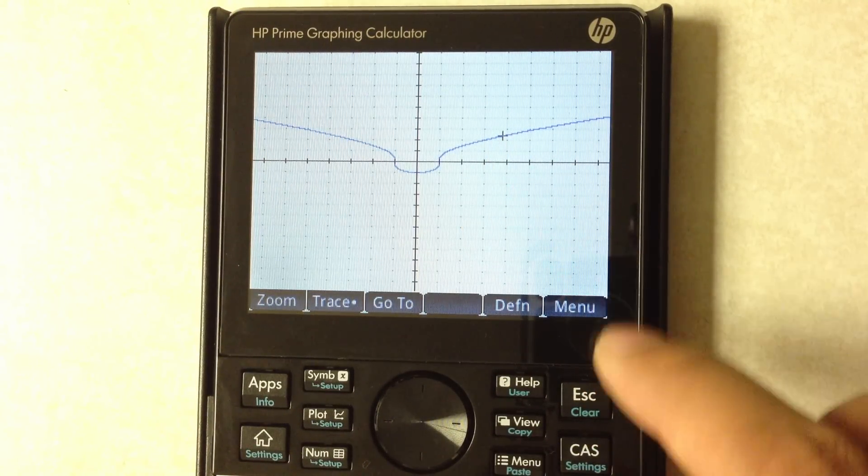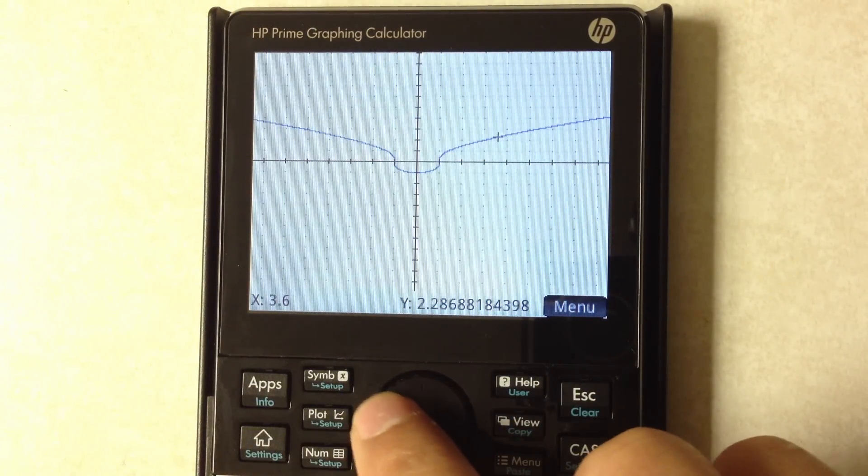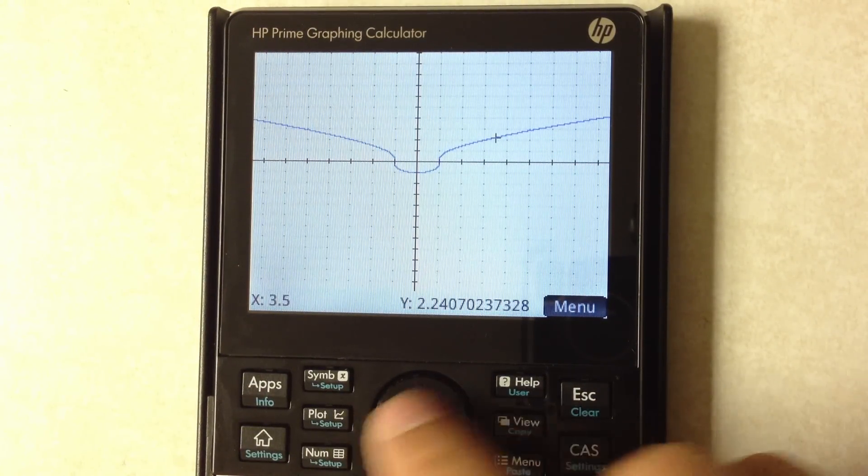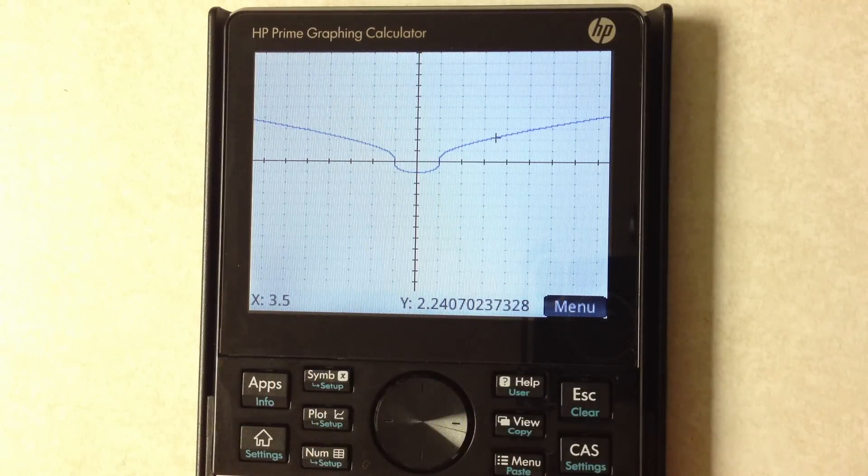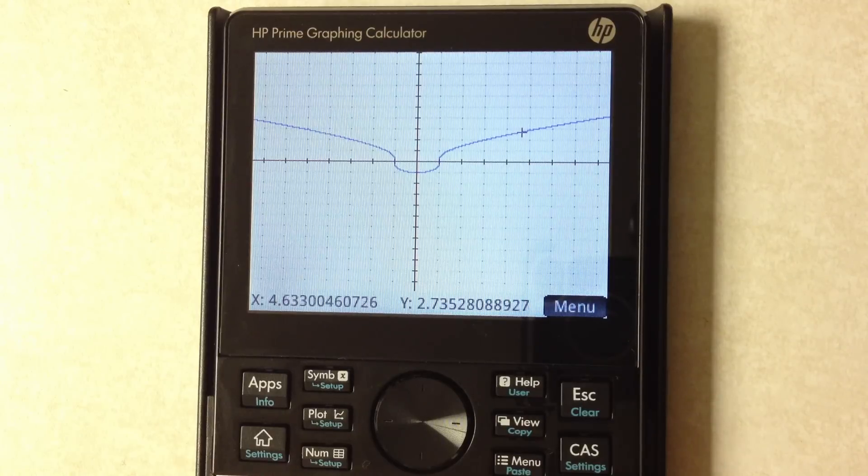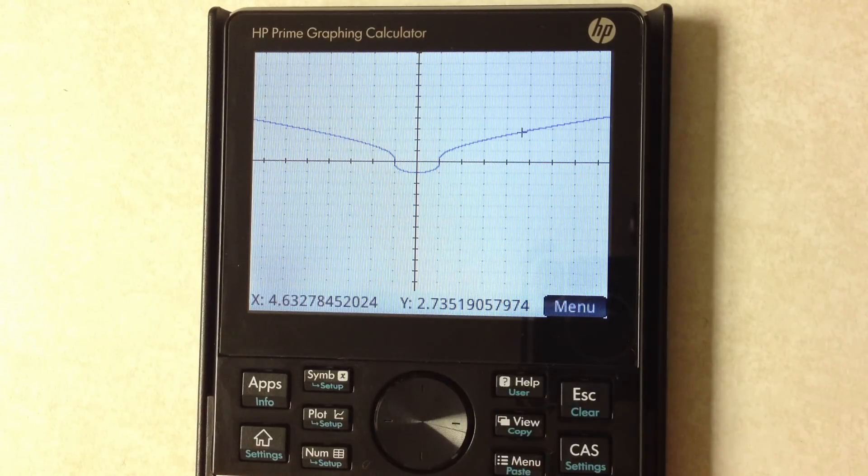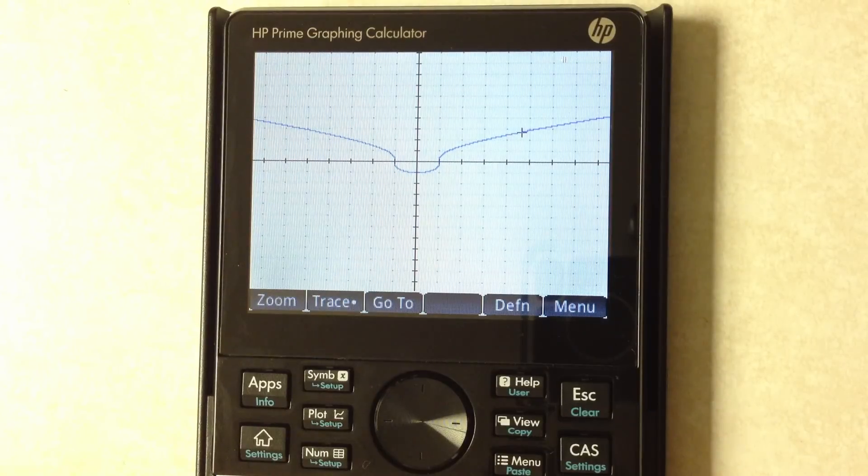When you were doing a trace feature usually you'd have to press the left or right arrow key to move the cursor and then the x y values would update. But now we just kind of tap on the screen and move our cursor to where we want and the y values update. So here you can see it updating real time there, so that's really cool.